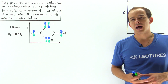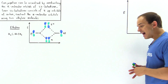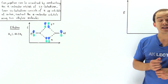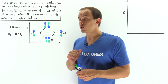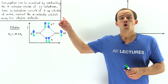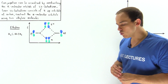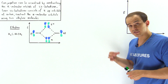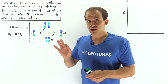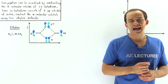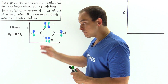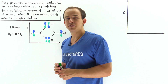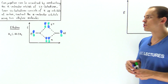One way to visualize conjugation in 1,3-diene is by constructing the pi molecular orbitals of that 1,3-diene. In this lecture, we are going to construct the pi molecular orbitals of 1,3-butadiene. Since 1,3-butadiene consists of four carbon atoms, we need to combine four 2p orbitals. Instead of combining individual 2p orbitals four times, we will combine two ethylene molecules to form 1,3-butadiene.